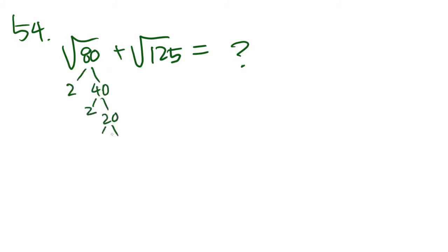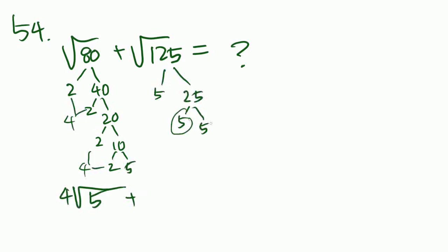2, 4, 0, 2, 2, 0, 2, 1, 0, 2, 5. So we have four 2s here, so that's a 4 and a 4. So that means we have 4 on the outside, 5 on the inside. Plus, let's do the same here. 5 goes into 125, 25 times 5, 5. So we have two 5s, 5 on the outside, 5 on the inside.